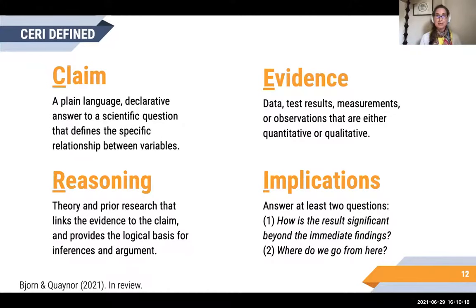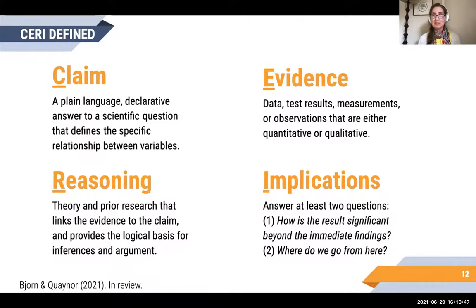Let's talk about what each part means, starting with Claim. A claim is a plain language, declarative answer to a scientific question that defines the specific relationship between variables. In fields like astronomy, it can also include discoveries and new methods. The Evidence is all the fun stuff — the data, test results, measurements, observations. It can be quantitative or qualitative or both. This is what we spend the bulk of our time as researchers gathering.